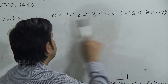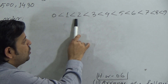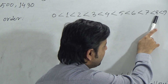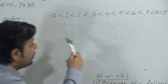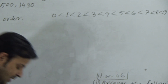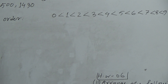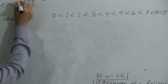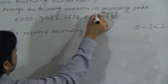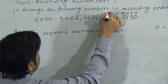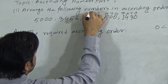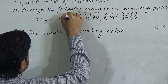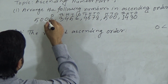We can arrange digits from smaller to larger: 0, 1, 2, 3, 4, 5, 6, 7, 8, 9. If we know this, then we can arrange the numbers. To arrange the numbers, we have to identify the position of the digits. This is the ones place, this is the tens place, this is the hundreds place, and this is the thousands place.